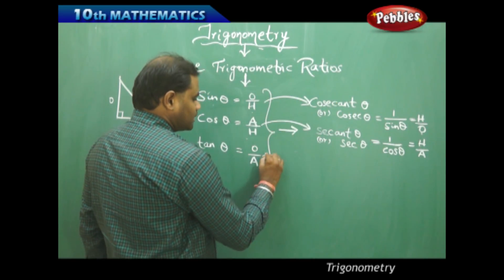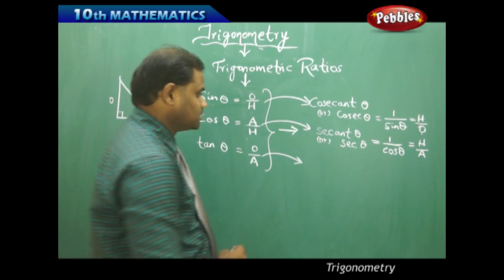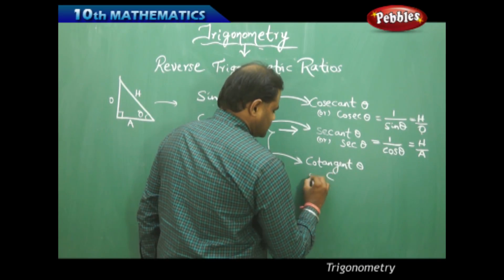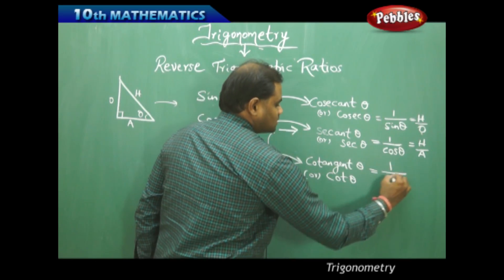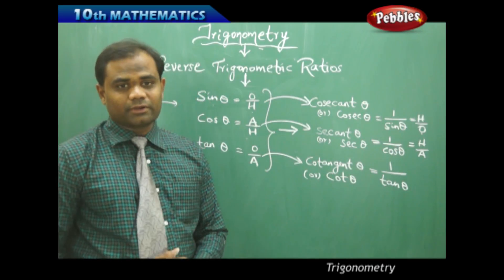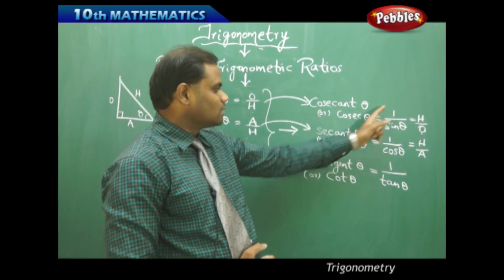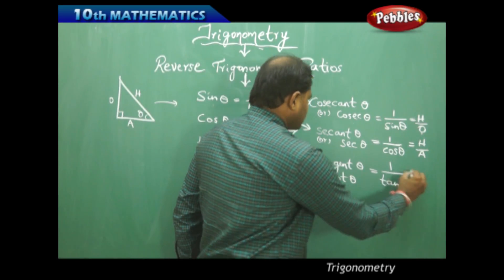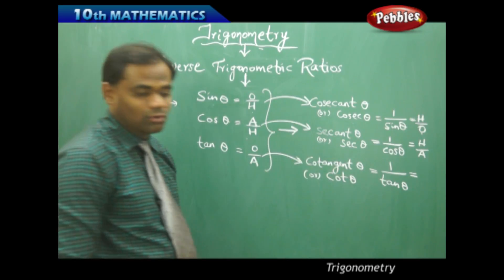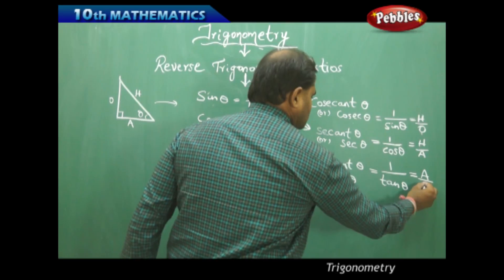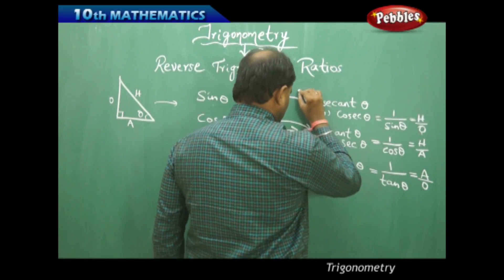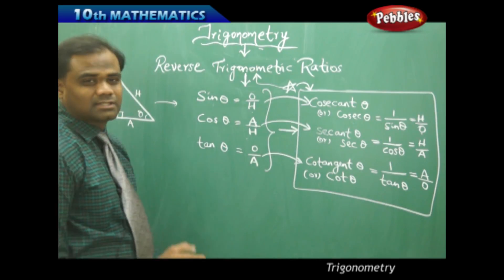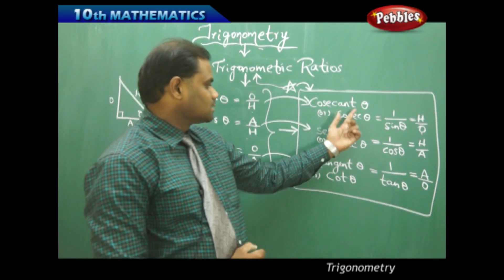Similarly, the reciprocal of tangent theta is called cotangent theta, written as cot theta, which equals one by tan theta. Since tan theta is opposite by adjacent, its reciprocal gives adjacent by opposite. So the reciprocal trigonometric ratios have their own formulas: cosecant equals one by sine, secant equals one by cos, and cotangent equals one by tan.